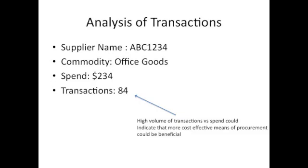Another really useful piece of information to look at is transactions versus spend. You'll often find suppliers with a relatively low spend but a high transaction count. The analysis can provide you with the prompt to look for a more efficient way of procuring goods and materials from those sorts of suppliers.